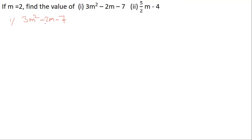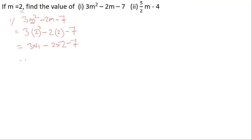In place of m we have to put the value 2. So we will write 3 into 2 squared, minus 2 into 2, minus 7. That means in place of m I am placing this value. So it will be 3 into 4, minus 2 into 2, minus 7, which gives 12 minus 4 minus 7. So the answer will be 1.